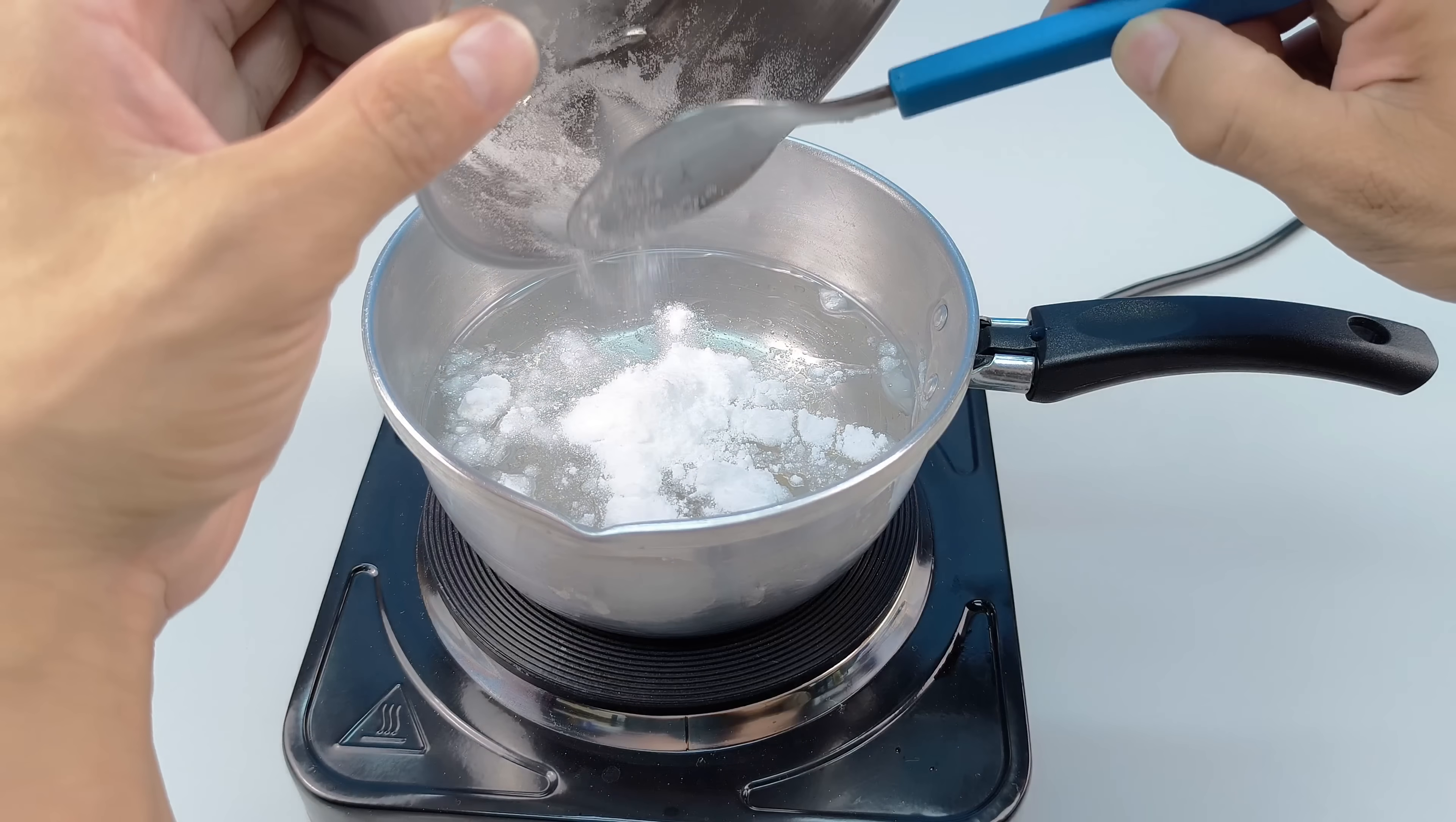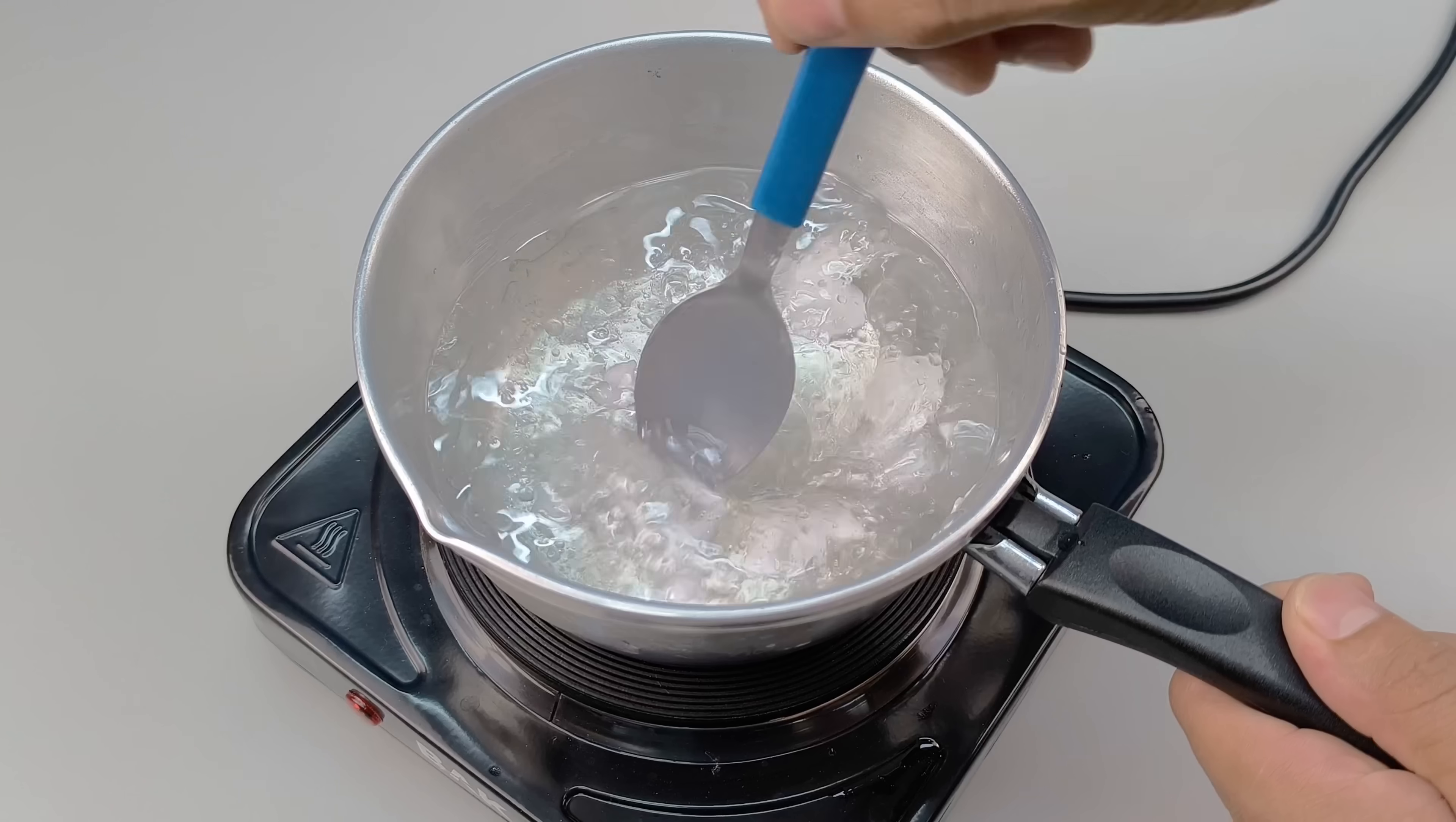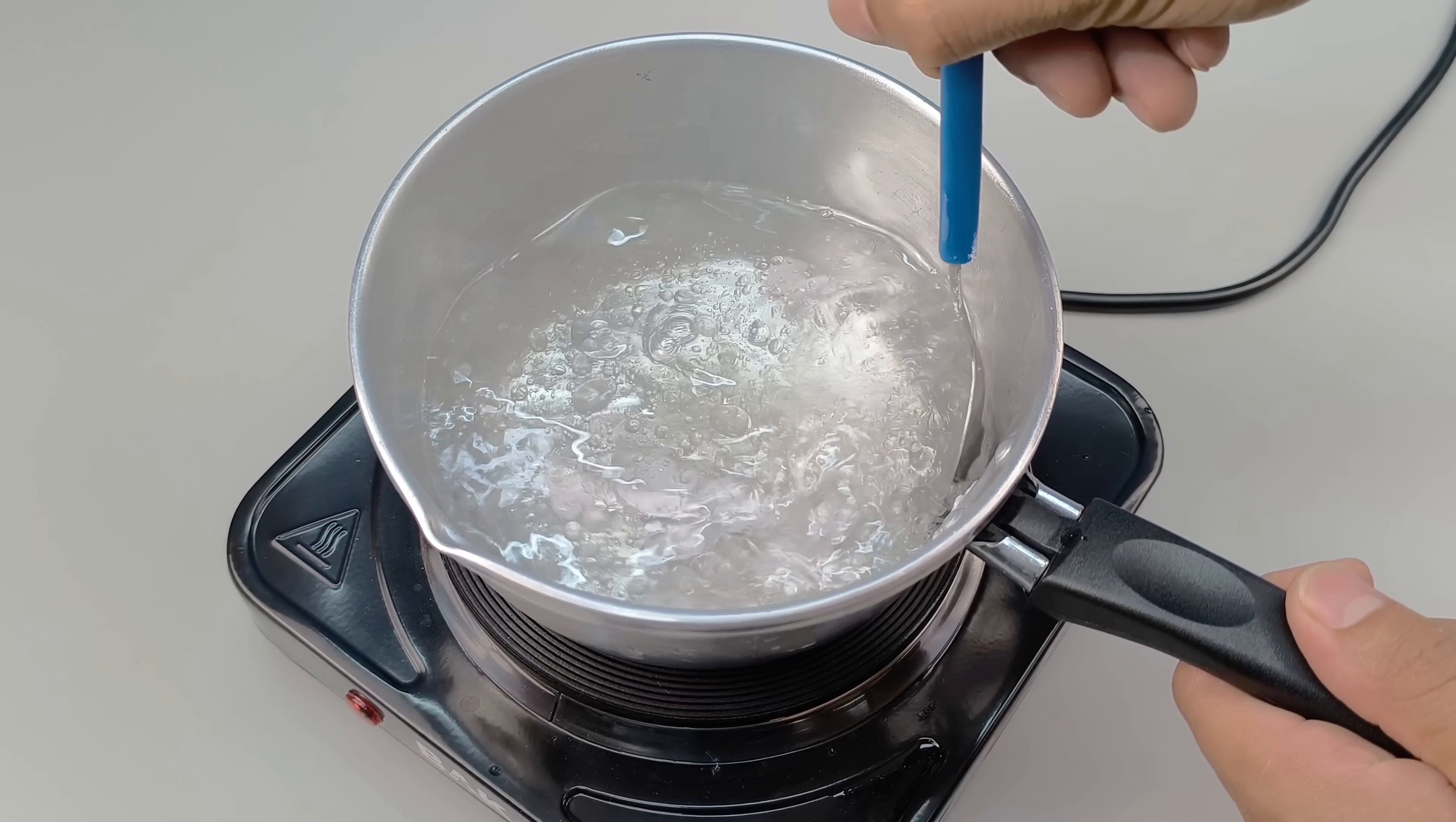The mixture will gradually begin to change, the mothballs will dissolve, and the liquid's appearance will visibly change, becoming denser, slightly opaque, and whitish in color. During this process, keep the room well ventilated and avoid inhaling the vapors directly, as mothballs release strong, volatile compounds that are potentially irritating to the respiratory tract.